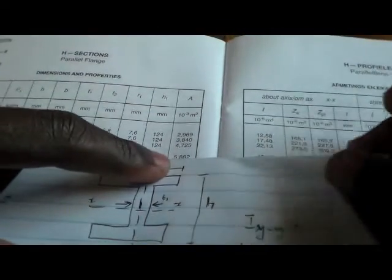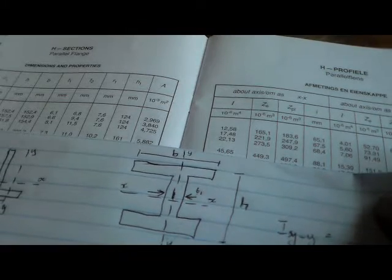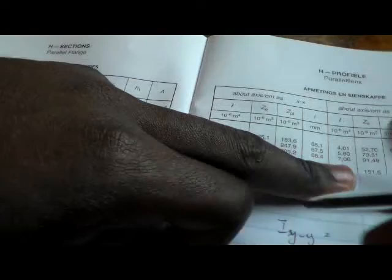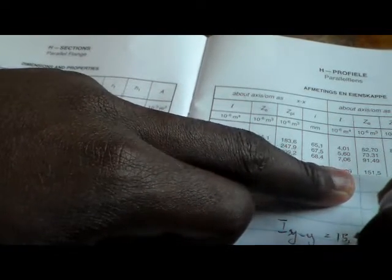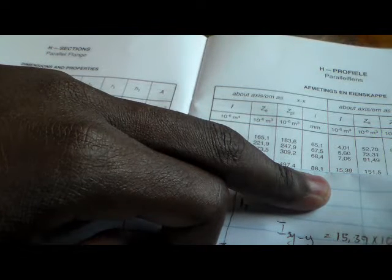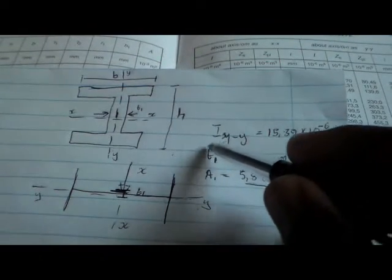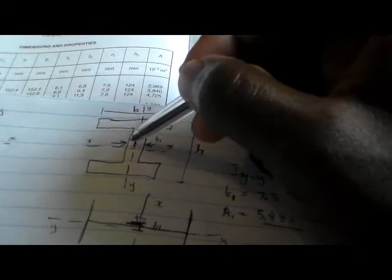We also have IYY, which is 15.39 times 10 to the power negative 6. So this is the data that we need to solve this question. Now that we know the area and T1 — T1 is the thickness of the flange of this edge section. The flange has a thickness, and we're looking at the point in the middle of this section.